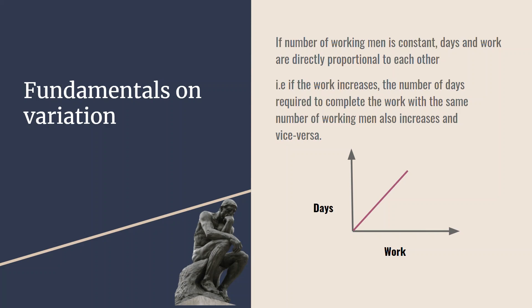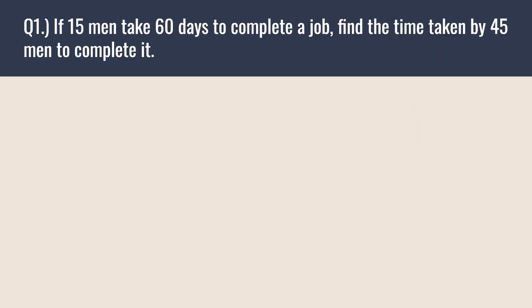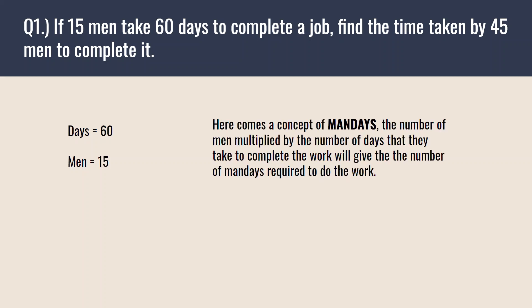Now moving to the question: if 15 men take 60 days to complete a job, find the time taken by 45 men to complete it. The number of days is given as 60 and the number of men is 15. Here comes the concept of man-days: the number of men multiplied by the number of days they take to complete the work gives the number of man-days required.